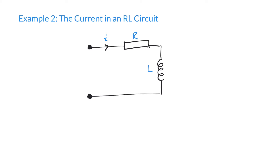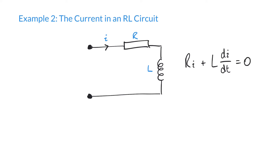Let's suppose we have this electronic circuit, made up of a resistor and an inductor. We're told that the current i in our circuit can be expressed using this differential equation: Ri + L(di/dt) = 0.